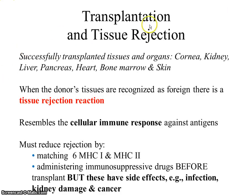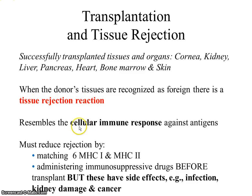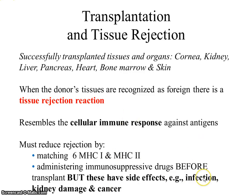Transplantation and tissue rejection are results of a functioning immune system. This basically comes down to the donor's tissues being recognized as foreign, causing a tissue rejection reaction. This is mostly done by T cells, so tissue rejection looks like a cytotoxic T response, and it's quite lethal. We try to reduce this by matching six surface self-antigens from MHC1 and MHC2, and we administer immunosuppressive drugs before transplant to keep T cells from becoming activated, though these drugs can cause other problems in the recipient.